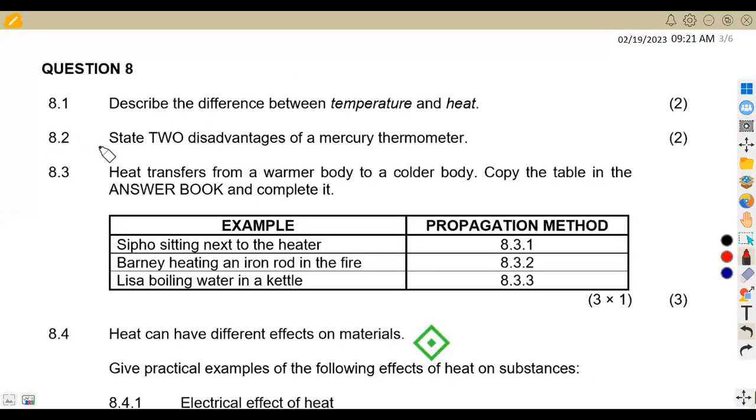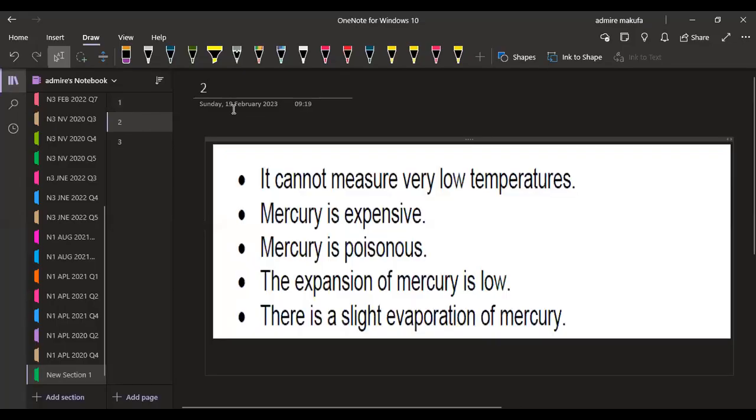Let's check the other part of the question, 8.2. State two disadvantages of a mercury thermometer. So on the disadvantages, we have got these ones that it cannot measure very low temperatures, mercury is expensive, mercury is poisonous, the expansion of mercury is low. Then there is a slight evaporation of mercury. You can just take any two of your choice.